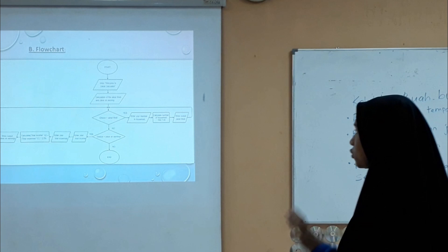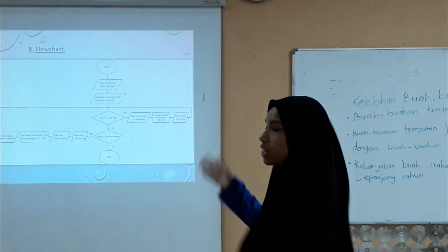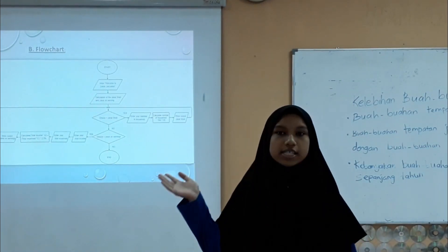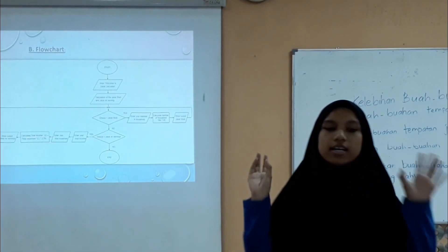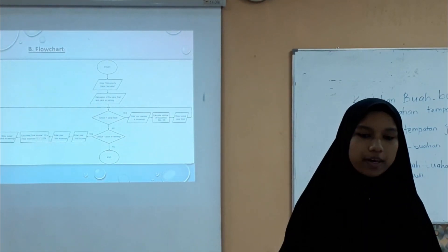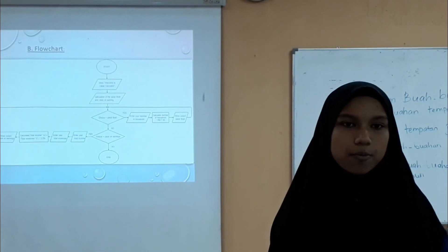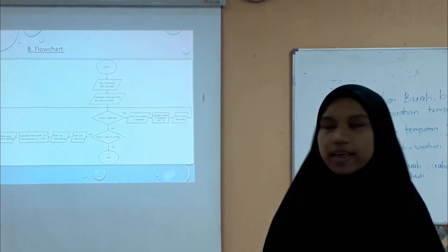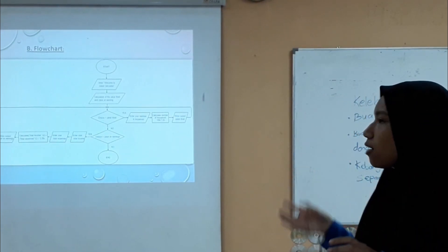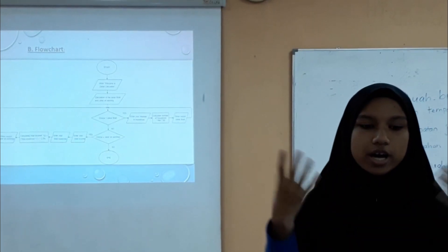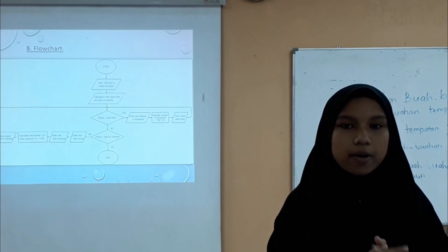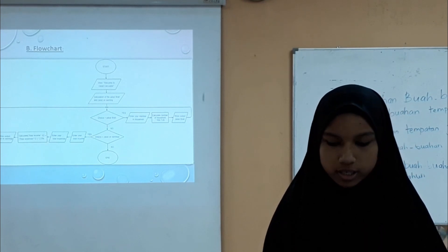Now I'll show the flowchart. As you can see, the loop arrow represents the loop that happens — it works the same way as the pseudocode I made before, but it helps the user understand more about the calculation.